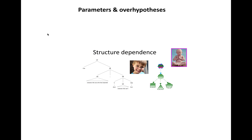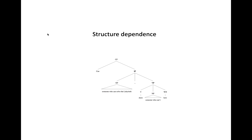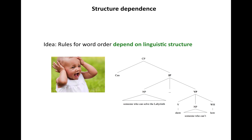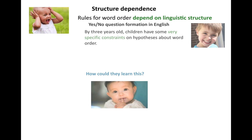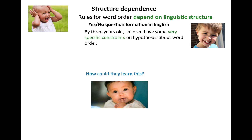Let's look at an example of over-hypotheses in action, having to do with structure dependence — the fact that linguistic generalizations depend on linguistic structure as opposed to other more surface properties. A specific example of this is word order. We've actually talked about an example before about complex yes-no question formation in English, where it seems that by three years old, children have some very specific constraints on the hypotheses they'll actually consider.